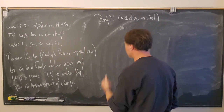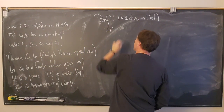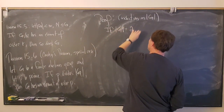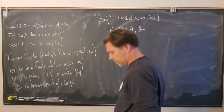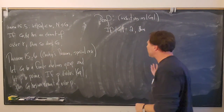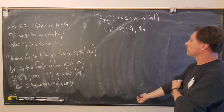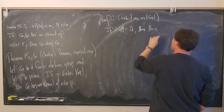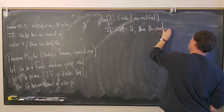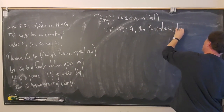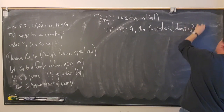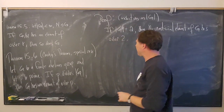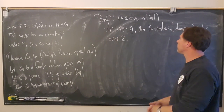First, let's get the easy case out of the way. If the order of G equals 2, then G has a trivial element and a non-trivial element. The non-trivial element has order 2, and that's the only prime that divides 2. So that takes care of the base case.